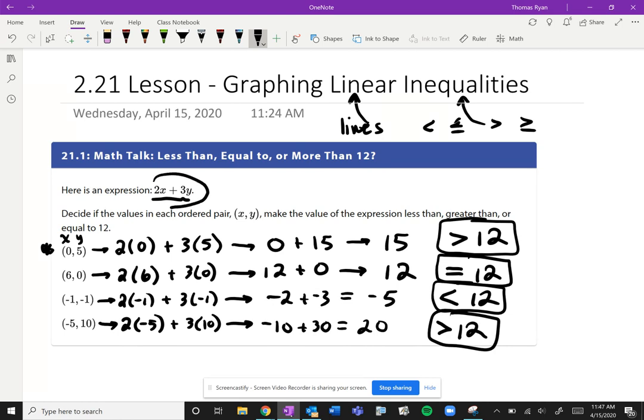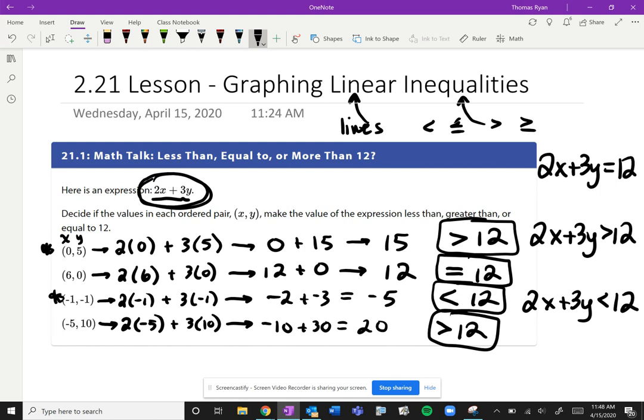What we really want to be thinking about is that this was our original expression, 2x + 3y. We want to be thinking that this is really saying 2x + 3y is greater than 12, or 2x + 3y is less than 12 when you start substituting in these certain points. This is very similar to when we saw something like this with an equal sign—we know that graph would be a line.